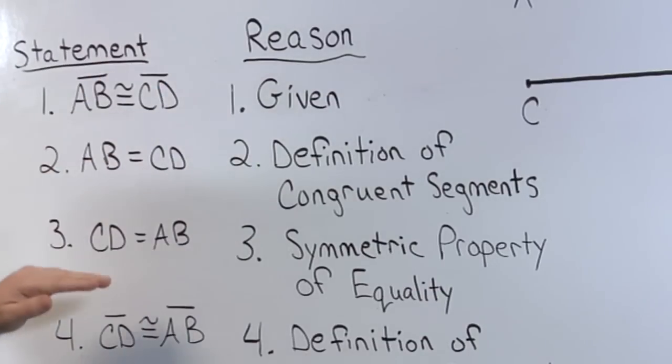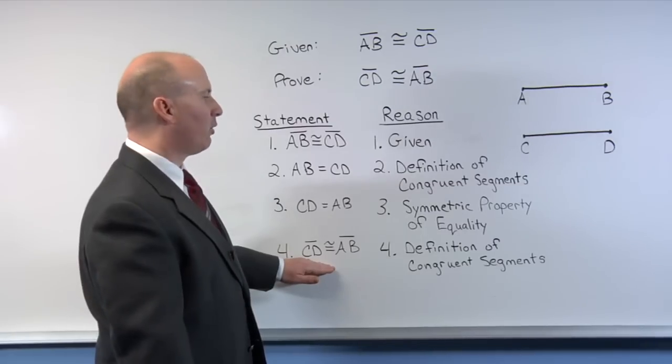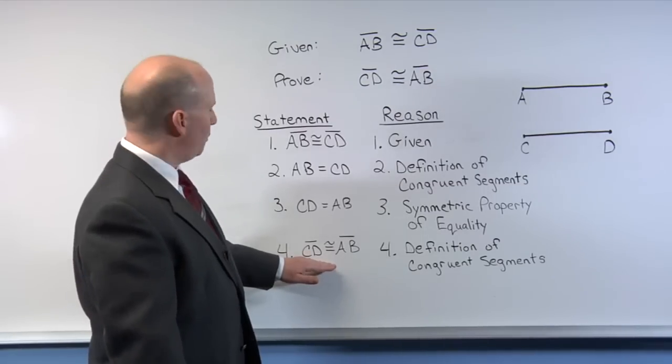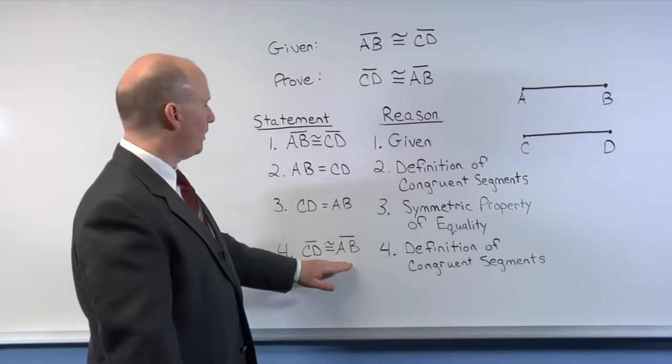Notice we're almost there. Our last step is using a definition of congruent segments, which says that line segment CD is congruent to segment AB.